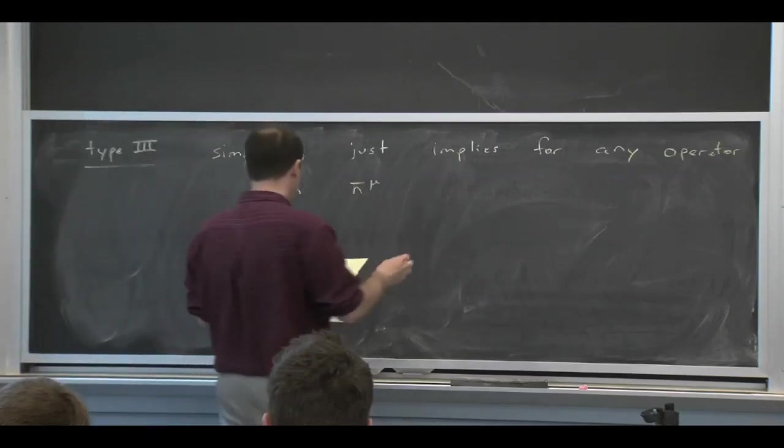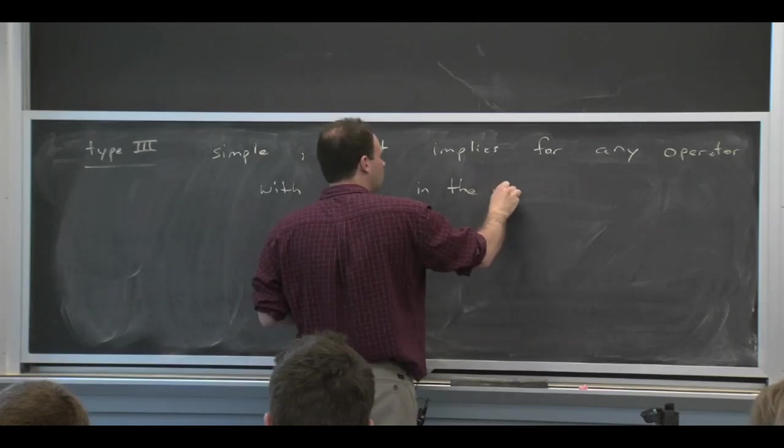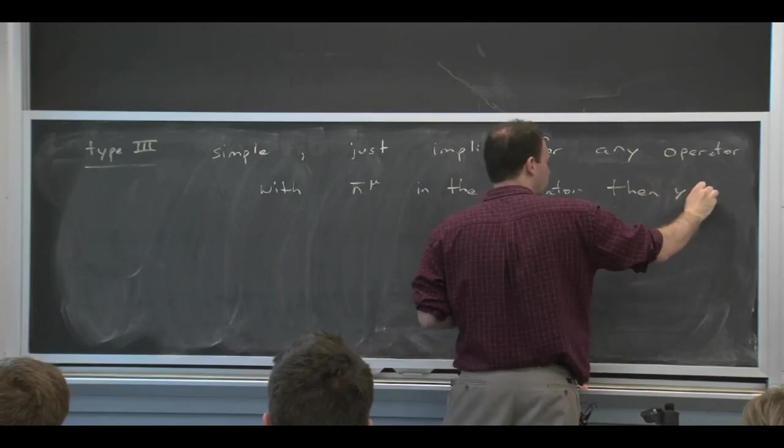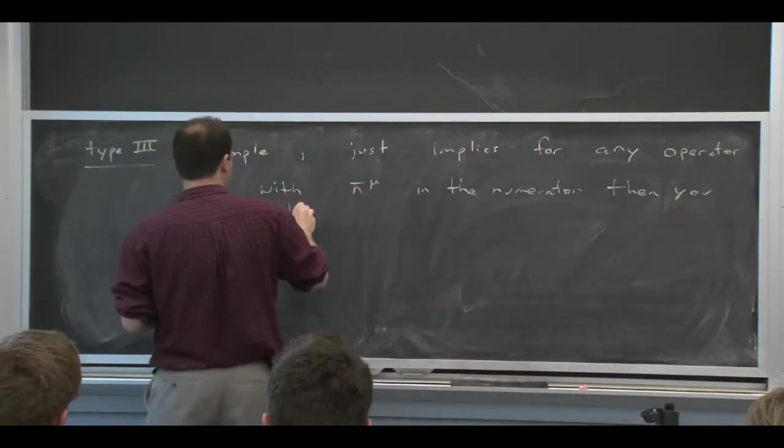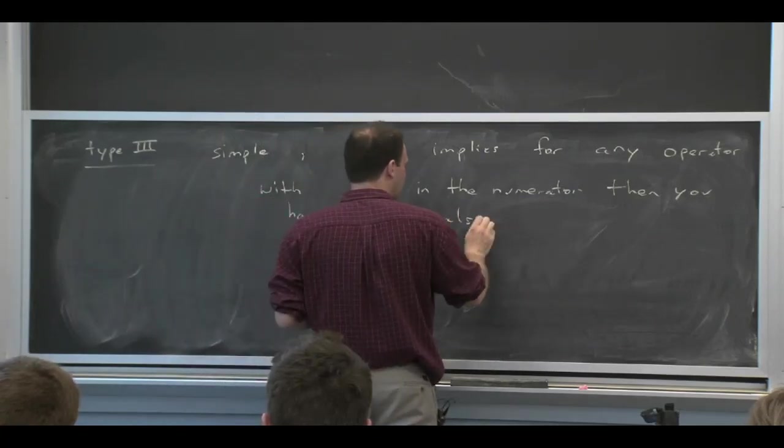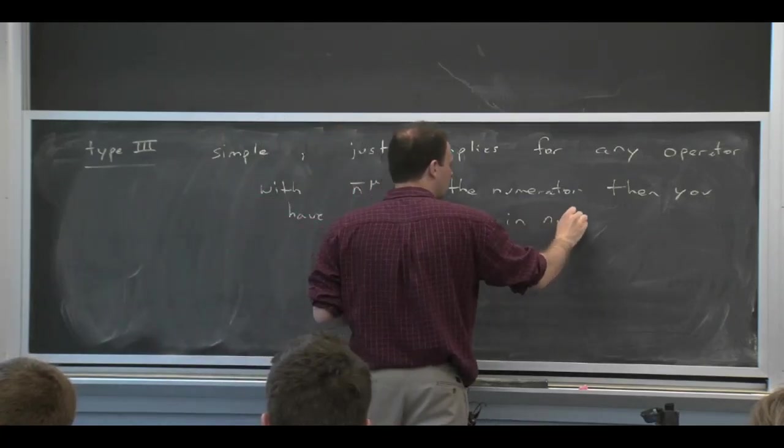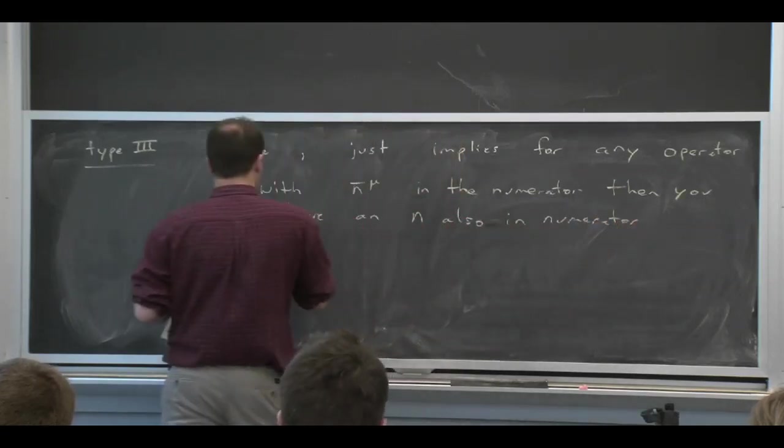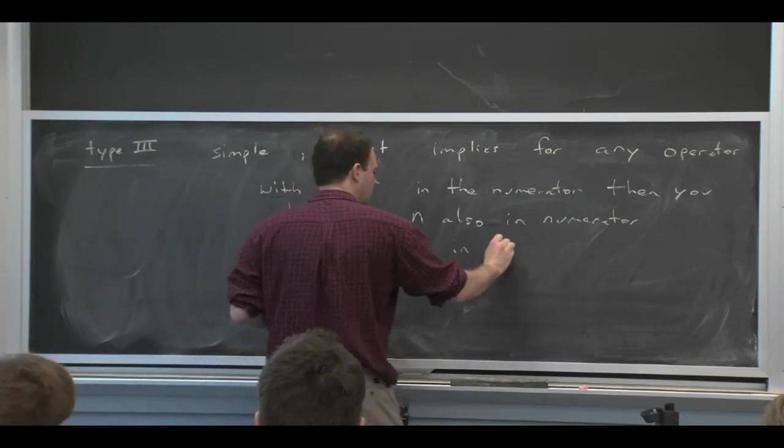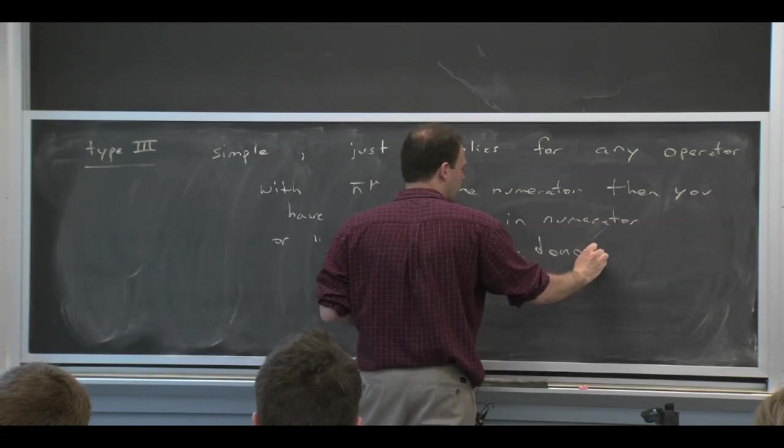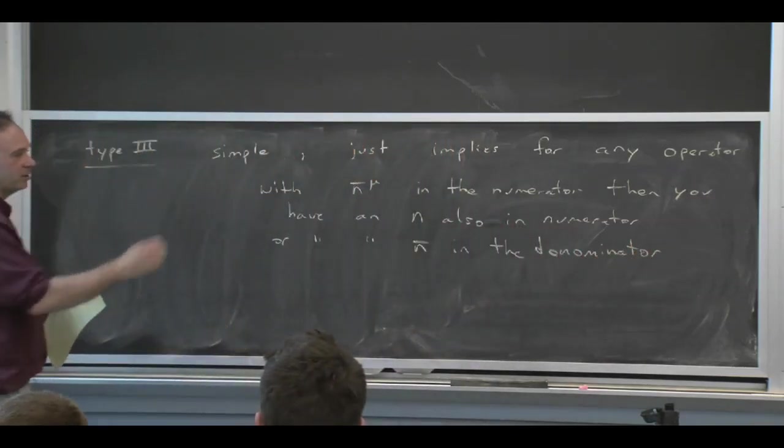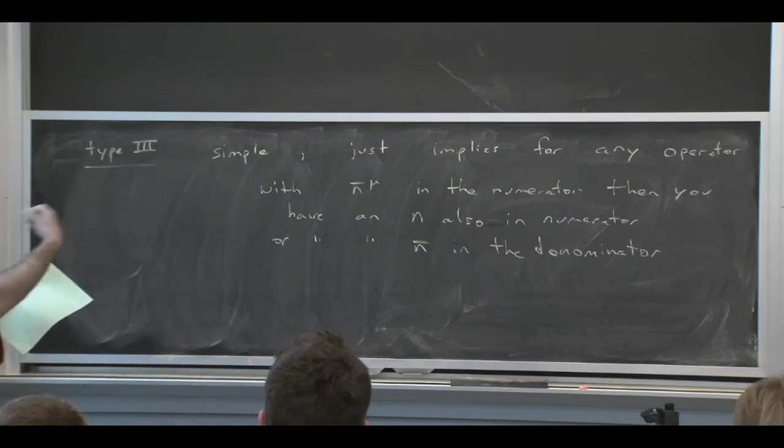then you either have a corresponding n in the numerator, or you have an n bar in the denominator, since we could have n bars in the denominator. And that was showing up in some places. Those are the two possible ways of compensating for the transformation. So it's just like a simple counting that you have.